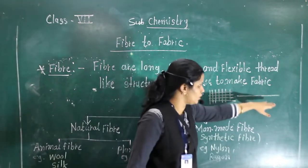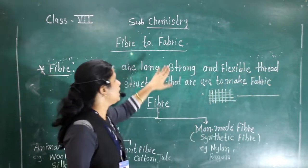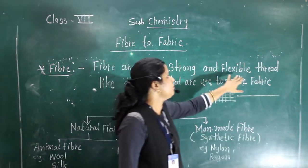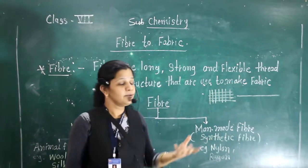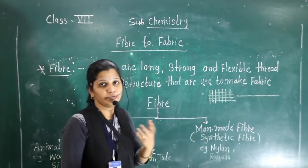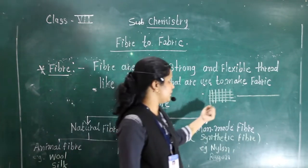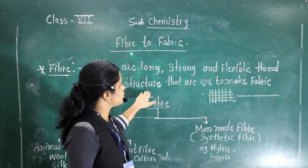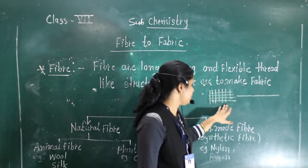Fibers are long, strong, and flexible thread-like structures that are used to make fabric. These fibers are long. It is a strong and flexible thread. We can bend this fiber anyhow how we want the fabric.